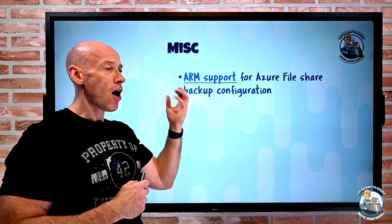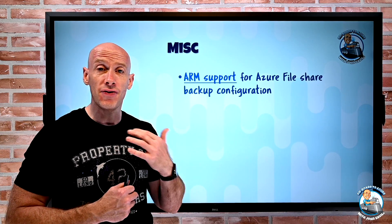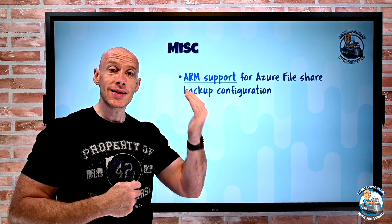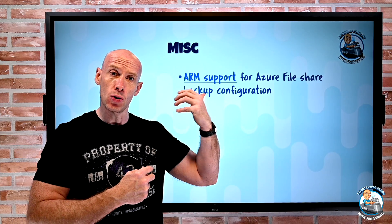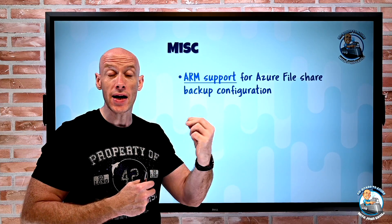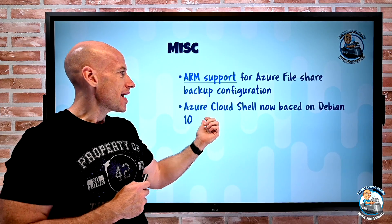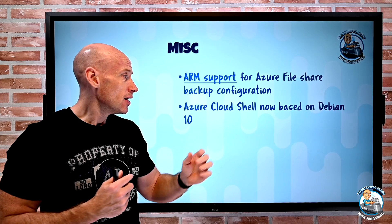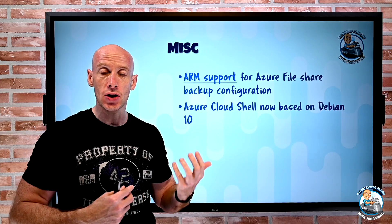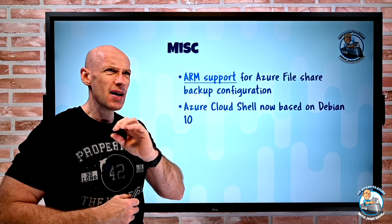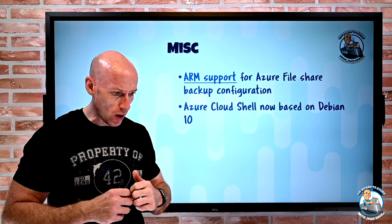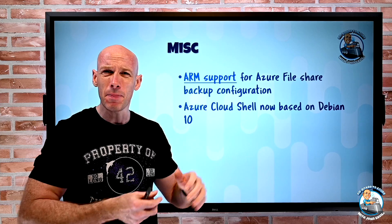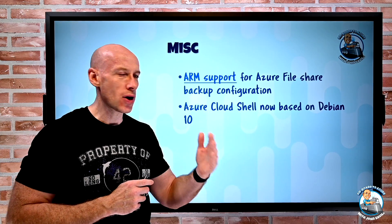Miscellaneous: there's now ARM support for Azure Fileshare backup configuration. They've got a sample template you can look at which will set up via Azure Policy the backup from Azure Files to Recovery Services Vault — you can even create the vault if you want. The Azure Cloud Shell is moving from Ubuntu 16.04, which is really end of life, to Debian 10, which Microsoft are doing their own compilation of. As part of that, they're upgrading to PowerShell 7.1, Python 3.7, Ruby 2.5, updating a bunch of the tools and getting rid of a bunch of the older stuff. So you're going to see Cloud Shell moving to that.